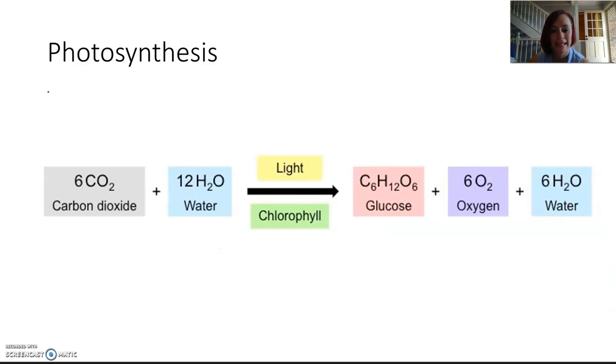Here's our beautiful balanced equation, our balanced chemical formula for photosynthesis. We've got our carbon dioxide and our water in the presence of light, and in this case, chlorophyll, which is our photosynthetic pigment, though there are others, create our byproducts, which are in this case, glucose, oxygen, and water.